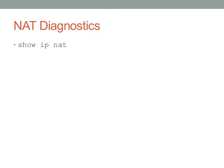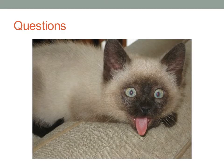For NAT diagnostics, 'show ip nat' and its variants let you inspect the translation table. 'Clear ip nat translation' is a handy command to clear your translation table — if you're having problems with NAT, clearing translations may resolve issues. 'Debug ip nat' shows translations as they're occurring in real time. That wraps it up for NAT. If you have questions or comments, please feel free to leave them in the section below.